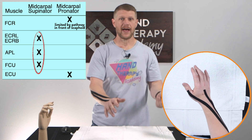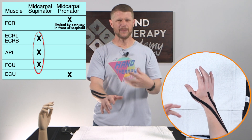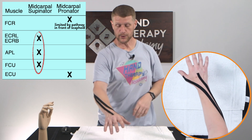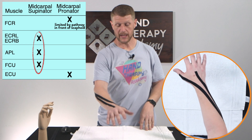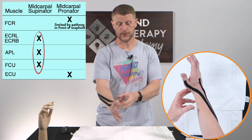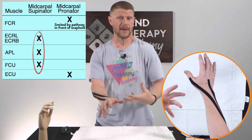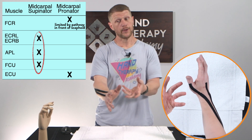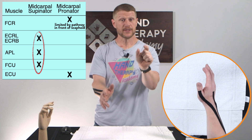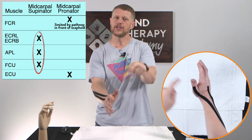Because ECRL, APL, and FCU are SL-friendly, they are lunotriquetral unfriendly. These muscles cause the scaphoid to supinate toward its correct position. If you have an SL injury where the scaphoid is not where it's supposed to be, you can use these muscles to bring it back into alignment.